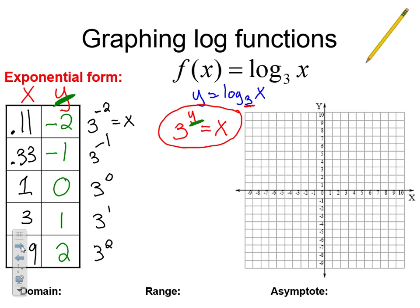Now we graph these points. We plot (0.11, -2), (0.33, -1), (1, 0), (3, 1), and (9, 2). The graph gets closer and closer to an x value, so our asymptote since there's nothing added or subtracted after 3 to the y is going to be x equals 0.